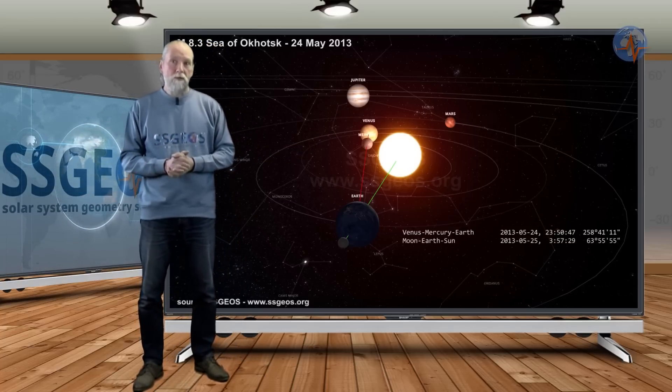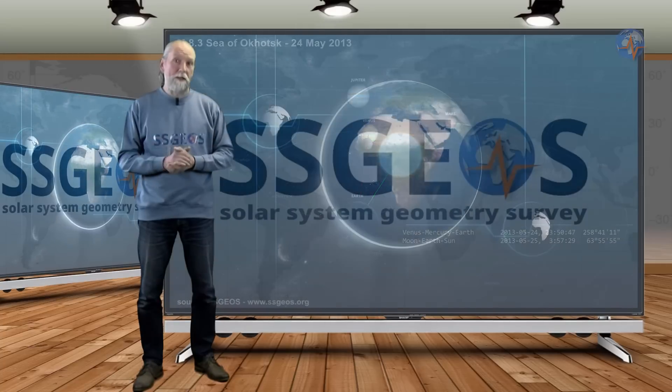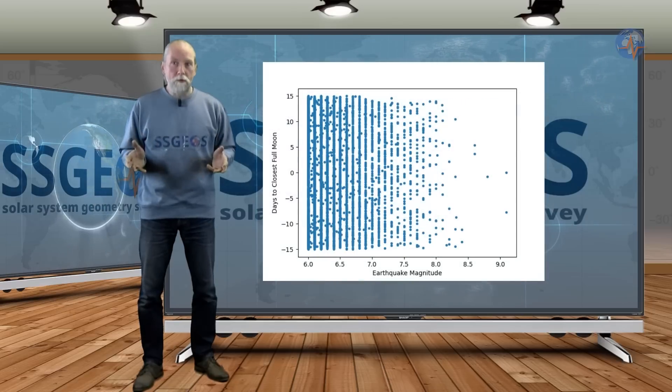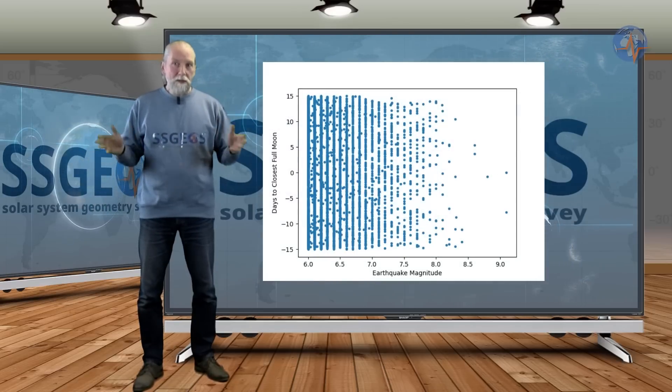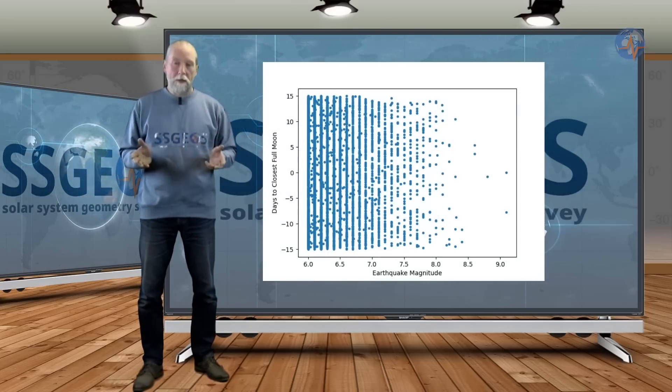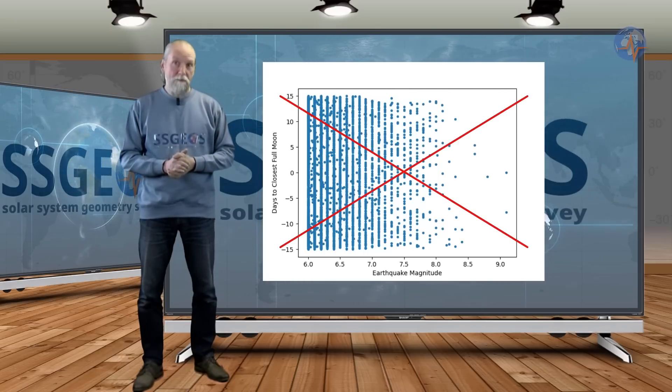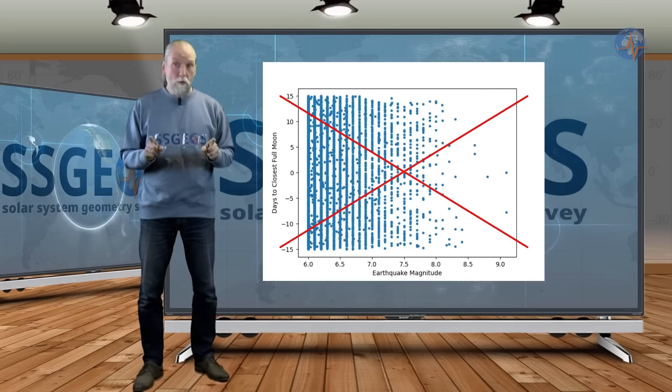So not every full moon is the same. There are major differences between the full moons because of the positions of the planets. An analysis of every full moon over a number of years may be interesting to prove that there is no correlation, but if you include the planetary positions, it becomes a completely different analysis, and you cannot possibly compare the two.